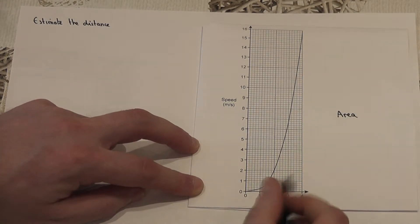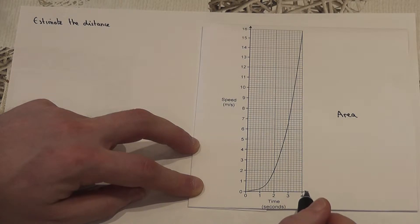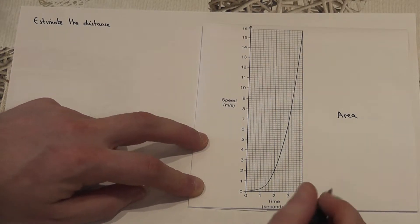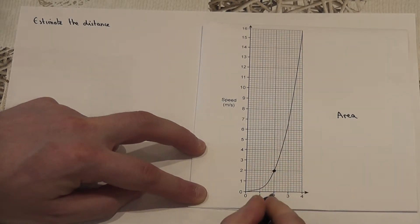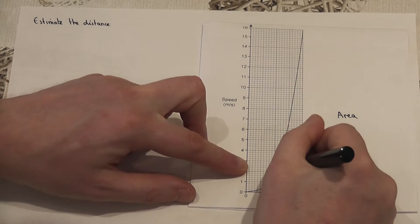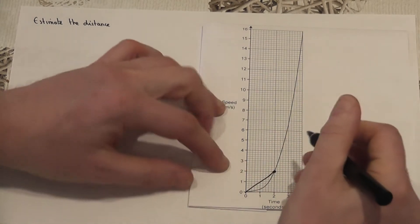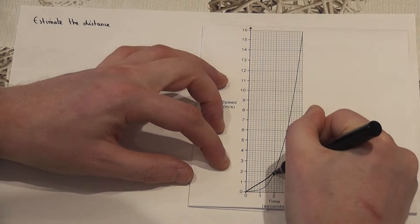To do this we split this graph into a number of shapes. Lots of options here. I'm going to split the graph in half and put a dot here on the coordinate 2, 2 and imagine this bit here and then imagine a line down here.